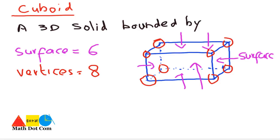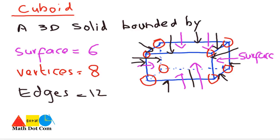Then, we have the edges. How many edges are there? There are 12 edges. 1, 2, 3, 4, 5, 6, 7, 8, 9, 10, 11 and 12. These are the edges.